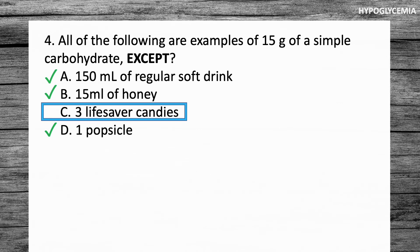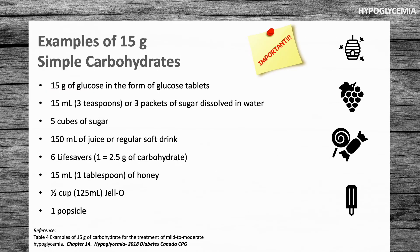Here are some more examples of 15 grams of simple carbohydrates. These are important to know and can be found in table four — examples of 15 gram carbohydrates for treatment of mild to moderate hypoglycemia — in chapter 14 of the 2018 Diabetes Clinical Practice Guidelines.